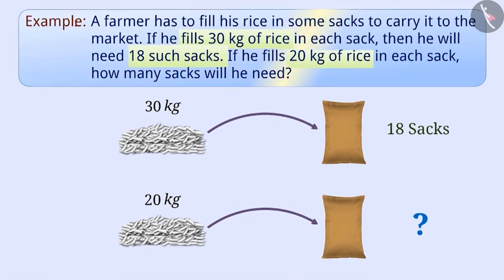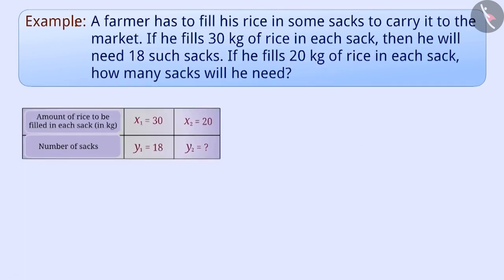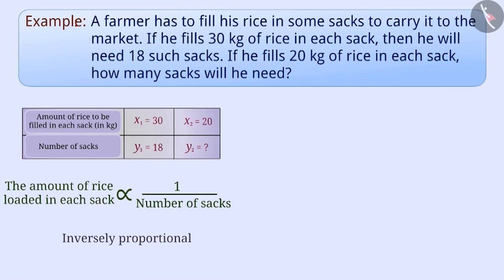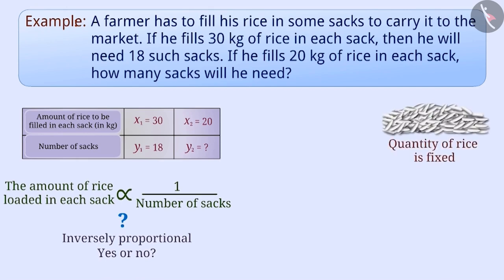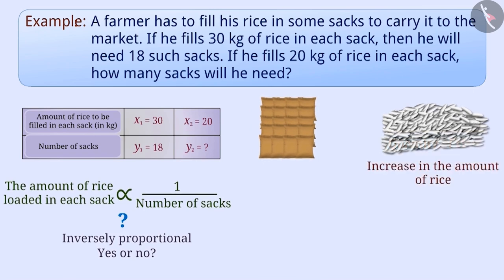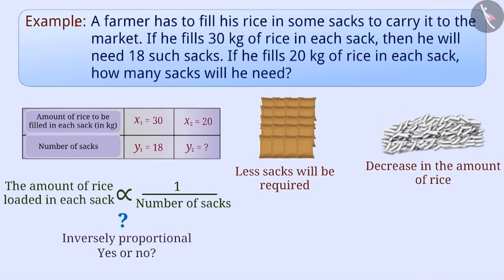We can represent the given information in a table like this, where the variable y2 represents the number of sacks. The quantity of rice here is fixed. If the farmer increases the amount of rice to be loaded in each sack, then the farmer will need fewer sacks in proportion. But if we decrease the amount of rice to be filled in each sack, we will need more sacks in proportion.